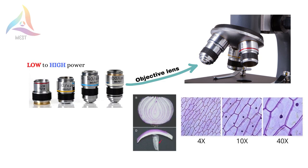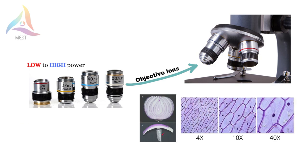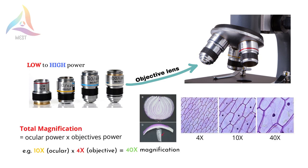What does an onion cell look like under the microscope? These pictures show the onion cell observed under a microscope at different magnifications. If we want to calculate the total magnification of the microscope, the power of the ocular lens must be multiplied by the objective lens.